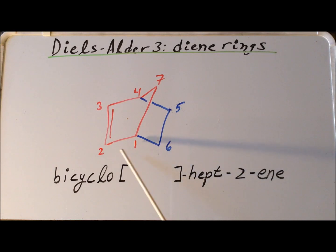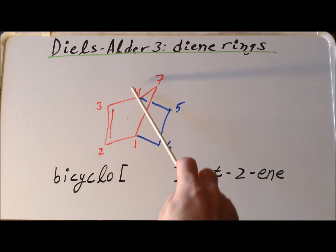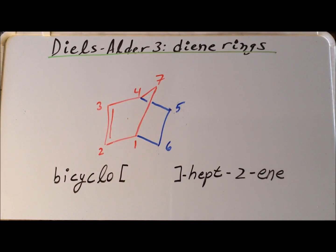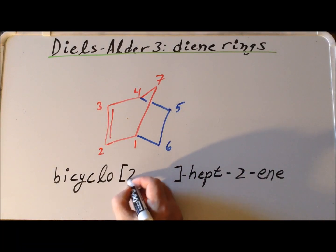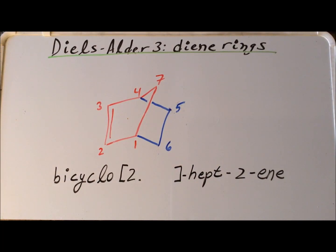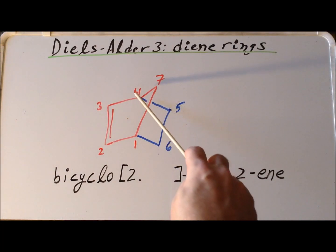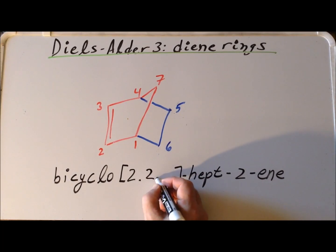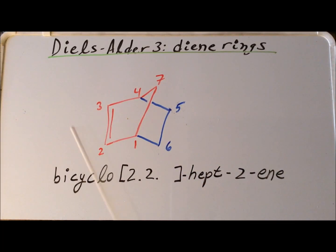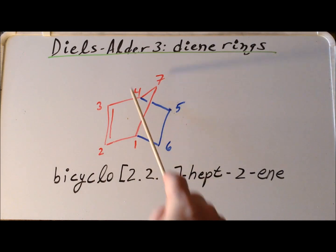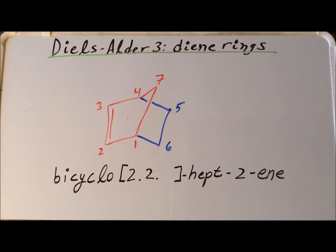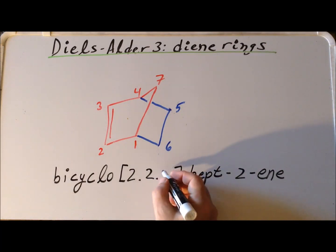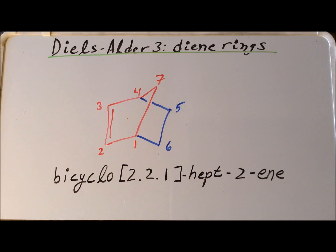The first number: between bridgehead carbons 1 and 4 we have two carbons, carbons 2 and 3, so our first number is 2, telling us the number of carbon atoms between the bridgehead atoms. Secondly, on the other side between 4 and 1 we have two carbons, carbons 5 and 6, so we put another 2. Finally, in the second ring between bridgehead carbons 1 and 4 we have exactly one carbon, carbon number 7, giving us the number 1. So formally, this is bicyclo[2.2.1]hept-2-ene.